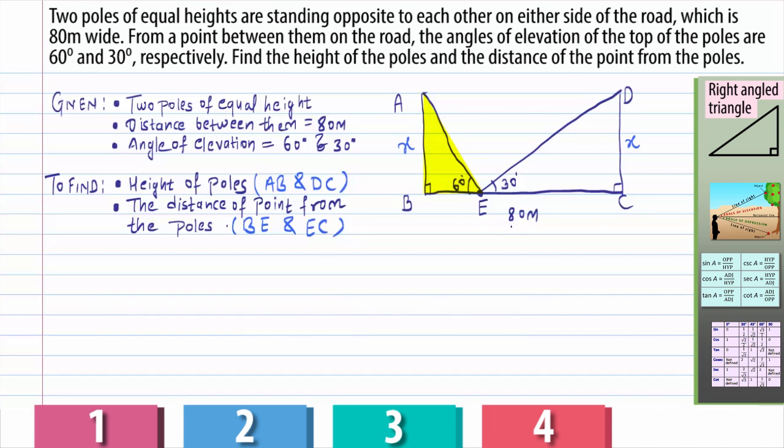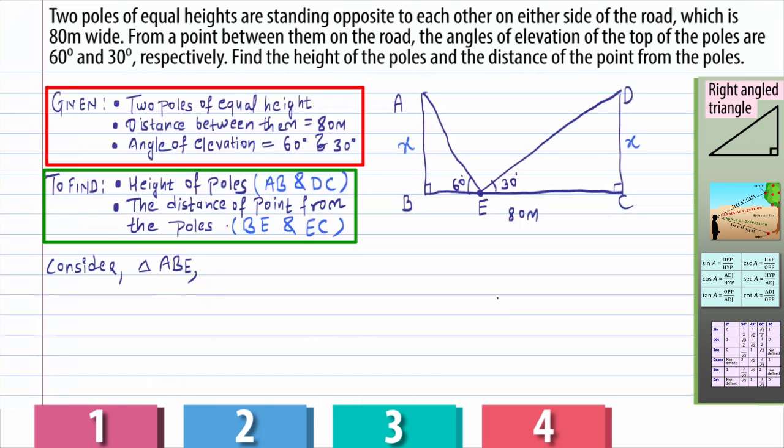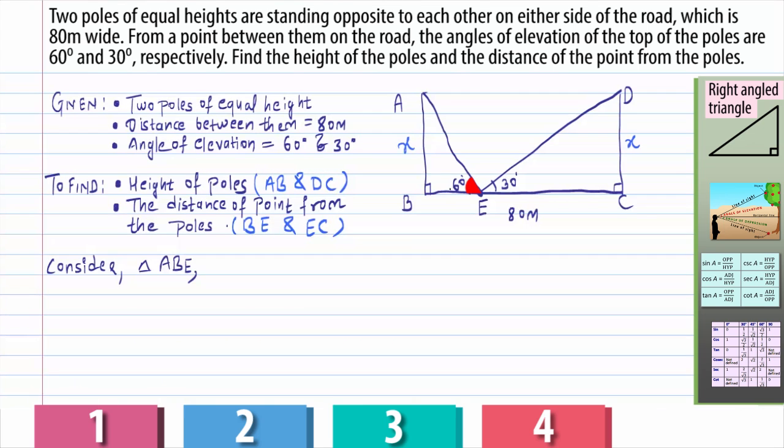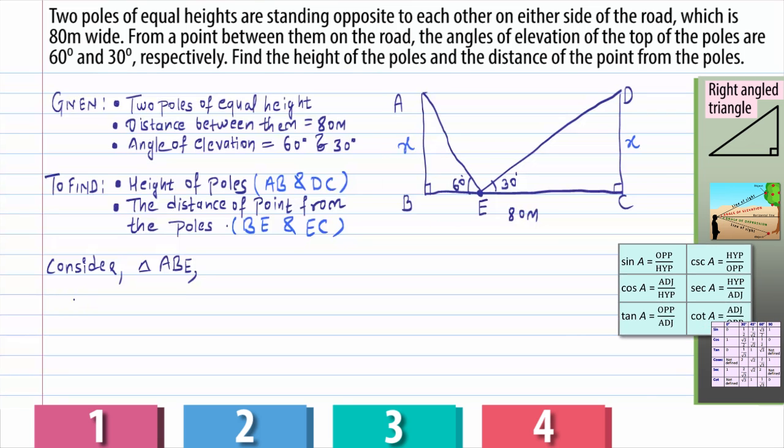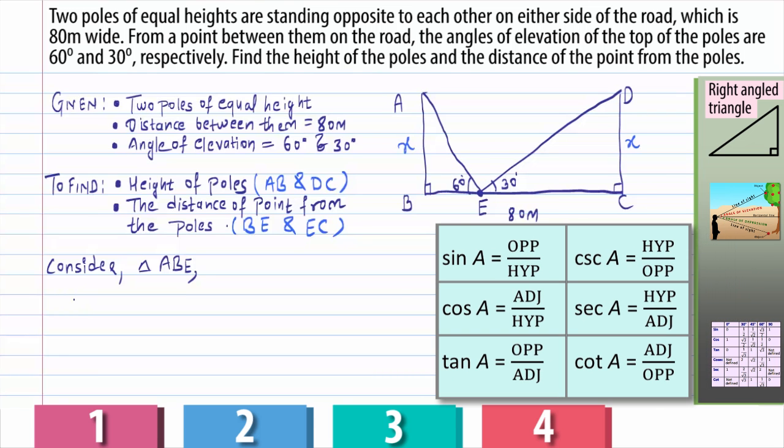Let's say we consider the right-angled triangle ABE. Now please remember that we need to always focus on the things that are given and the things to be found. So with respect to the given angle 60 degrees, things that we need to find, that is AB and BE, they are the opposite and adjacent sides respectively. Now here comes the role of the six trigonometric ratios. And I will choose sine.